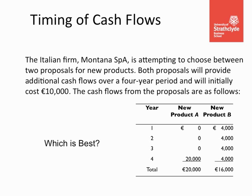The second area is the timing of cash flows — when the cash flow occurs. Consider two projects. Project A costs 10,000 euros and returns 20,000 euros in year four, giving a profit of 10,000 euros. Project B also costs 10,000 euros but gives four cash flows across earlier years totalling 16,000 euros — a smaller total, but received sooner. The question is: which project is the best? I will answer that after I have shown you the techniques.